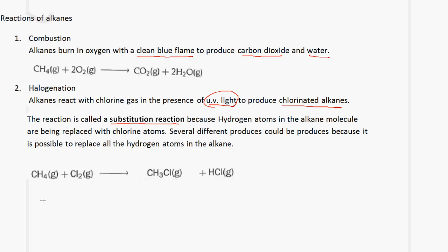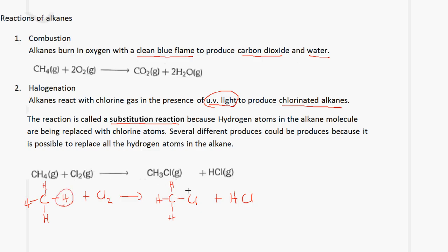Several different products could be produced because it is possible to replace all the hydrogen atoms in the alkane. If we look at one possible reaction, we can have CH4 plus Cl2 and we can get CH3Cl plus HCl. What we've done is replace one hydrogen atom with one chlorine atom.